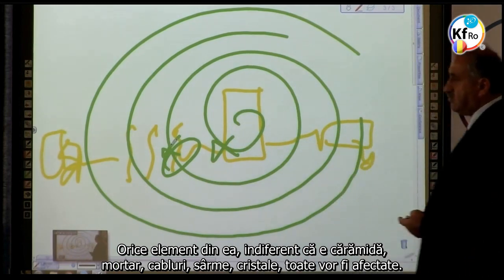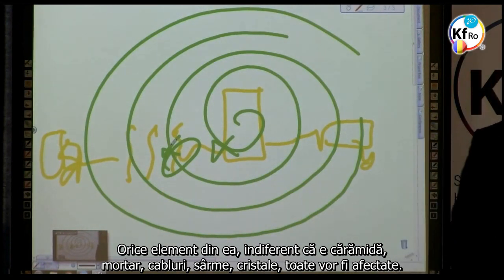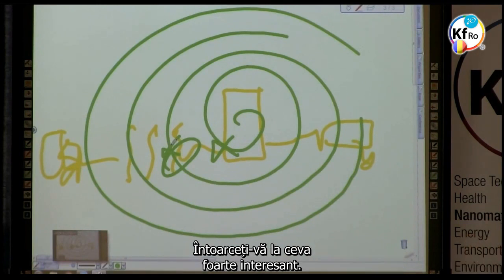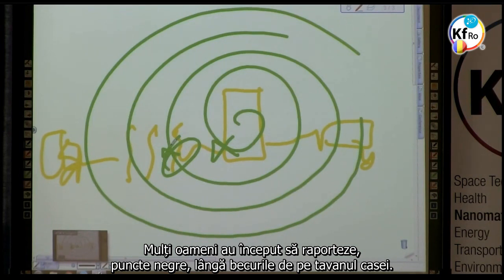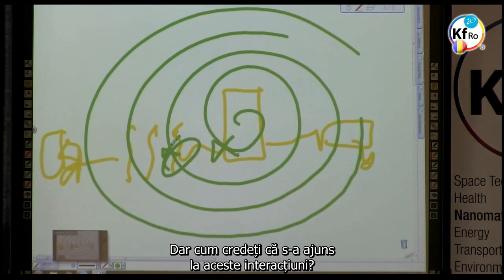Every element in it — brick, motor, cables, wires, crystal chandelier — they all get affected. Go back to something very interesting. From November, December time, a lot of people start reporting black spots near the light on the ceiling in their houses, and it just disappeared. Nobody talked about it anymore. But how do you think these interactions came about?